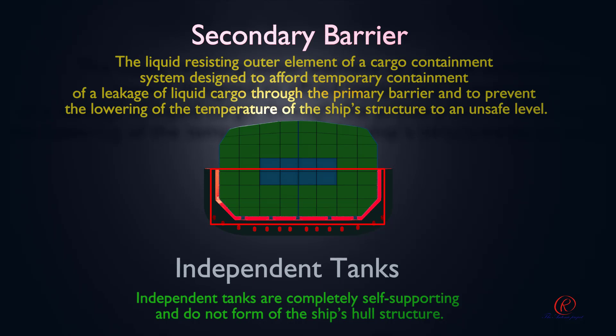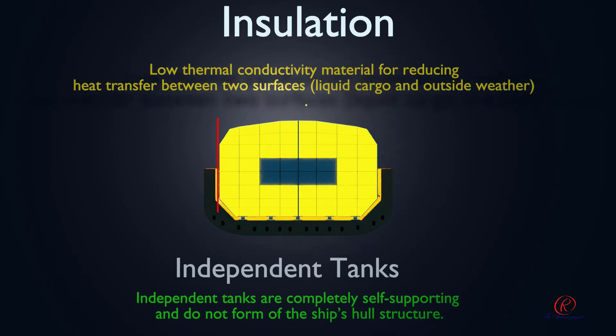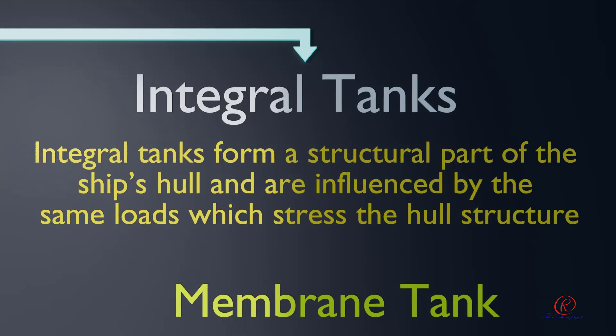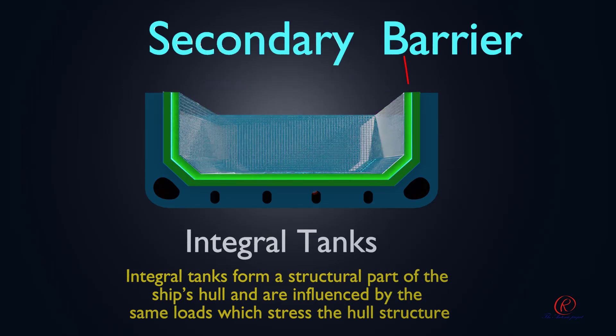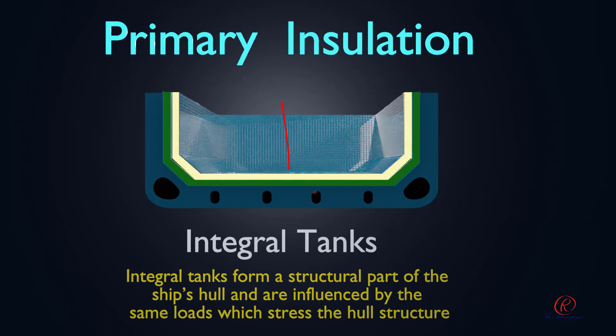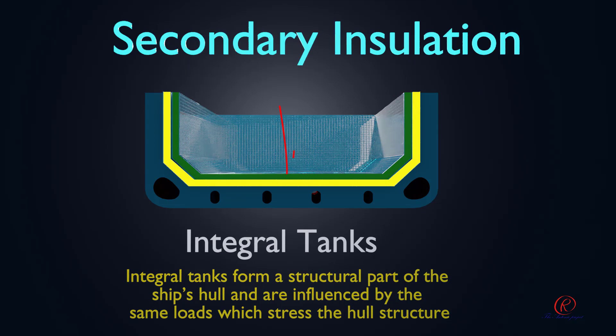Insulation is a low thermal conductivity material used for reducing heat transfer between two surfaces, such as the liquid cargo and outside weather. The second type is integral tanks. Integral tanks form a structural part of the ship's hull and are influenced by the same loads which stress the hull structure. Tank structure consists of a primary barrier, secondary barrier, primary insulation, and secondary insulation.